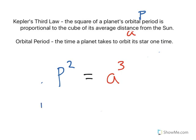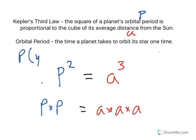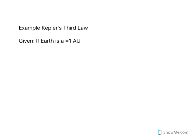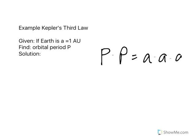P squared is just P times P, and A cubed is just A times A times A. P must be expressed in units of years, and A must be expressed in units of astronomical units — you cannot use any other units in this equation. For example: if Earth is about one astronomical unit on average from the sun, find the orbital period of Earth. P times P equals A times A times A, and with A equal to 1 AU, P times P equals 1 AU times 1 AU times 1 AU.